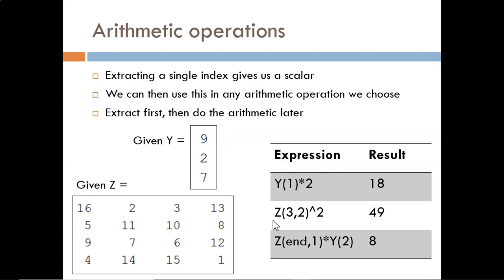Here, where I see Z(3,2), I substitute a 7. Then 7 squared produces 49.